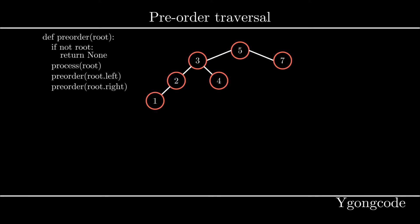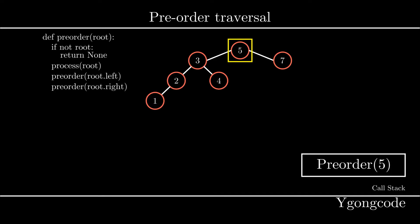Let's visualize this traversal on the following tree. First, we start the traversal by making a recursive call to the root of the tree, which is marked as 5. As a result, we push this call into our call stack. Now that we're at 5, we process its value and then make another recursive call to its left subtree, which is 3.